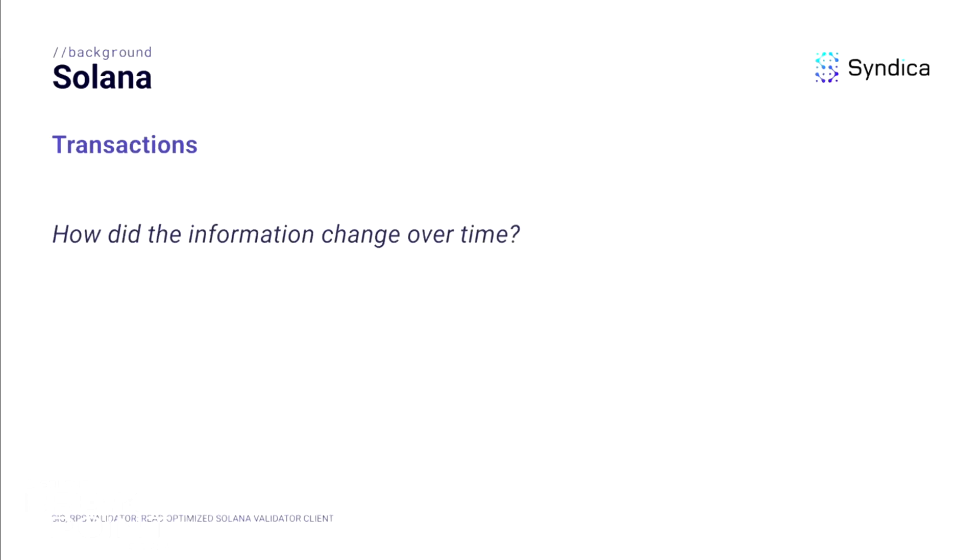As a database, Solana needs to store information. The first type of information stored on Solana are accounts, which answer the question: what information exists right now? Examples could be something like 'I have $100' or 'I'm allowed to vote in governance.' The other type of information stored by Solana are transactions, which answer the question: how did information change over time? Examples would be 'I paid somebody $100' or 'I submitted a vote for a proposal.'